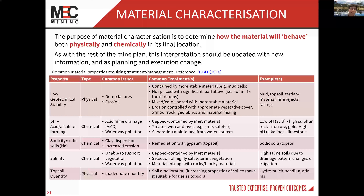Material characterisation is about how the material is going to behave physically and chemically when placed in its final location — a long-term assessment. The interpretation of how material is expected to behave should be updated as new information comes to light or as there are any changes to planning and execution. Common properties of material requiring some sort of treatment or management: first, low geotechnical stability — low cohesion, friction, angle of repose — with common issues being dump failures and erosion.